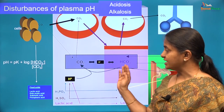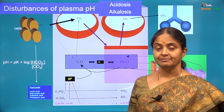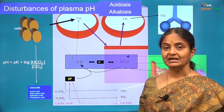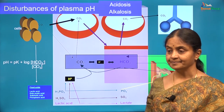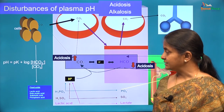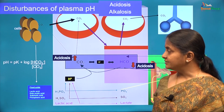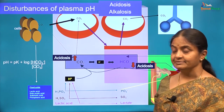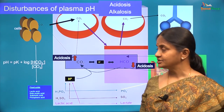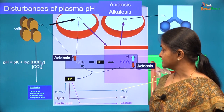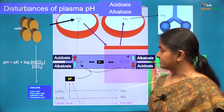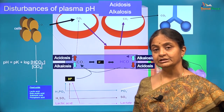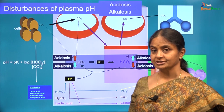Any change in the concentrations of carbon dioxide and bicarbonate can disturb the plasma pH. An increase in carbon dioxide or a decrease in bicarbonate will lead to acidosis, whereas an increase in bicarbonate or a decrease in carbon dioxide will lead to alkalosis.